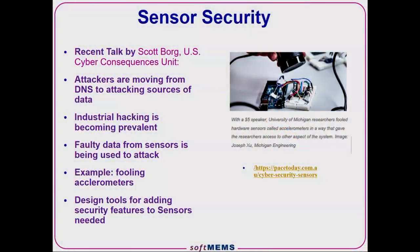There's a recent talk by Scott Borg from the U.S. Cyber Consequences Unit noting that attackers are moving to a new paradigm—attacking sources of data. Industrial hacking in machines is becoming more prevalent, and attackers are using faulty data from sensors to attack systems. A university example showed how a $5 part could fool accelerometers into giving faulty readings, enabling access to the attached system through external stimuli. We need design tools for analyzing security risks at the sensor level, because if an attacker can come in through the sensor, that's a big problem.